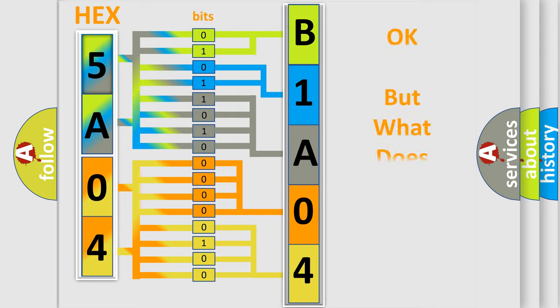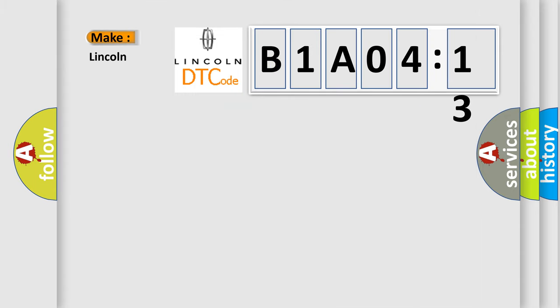The number itself does not make sense to us if we cannot assign information about what it actually expresses. So, what does the diagnostic trouble code B1A0413 interpret specifically for Lincoln car manufacturers? The basic definition is TR sensor circuit malfunction. And now this is a short description of this DTC code.